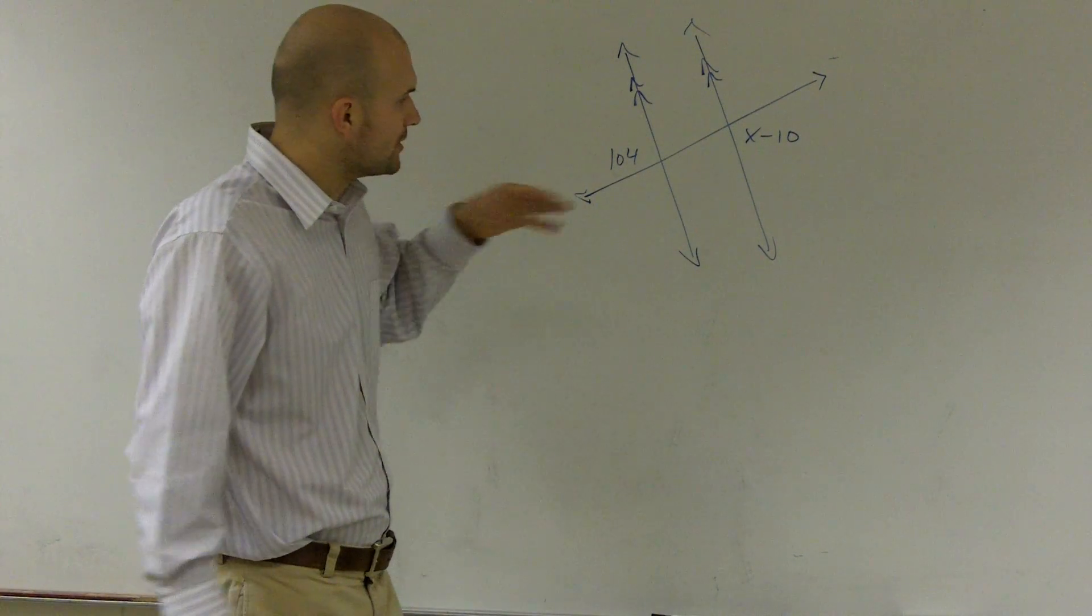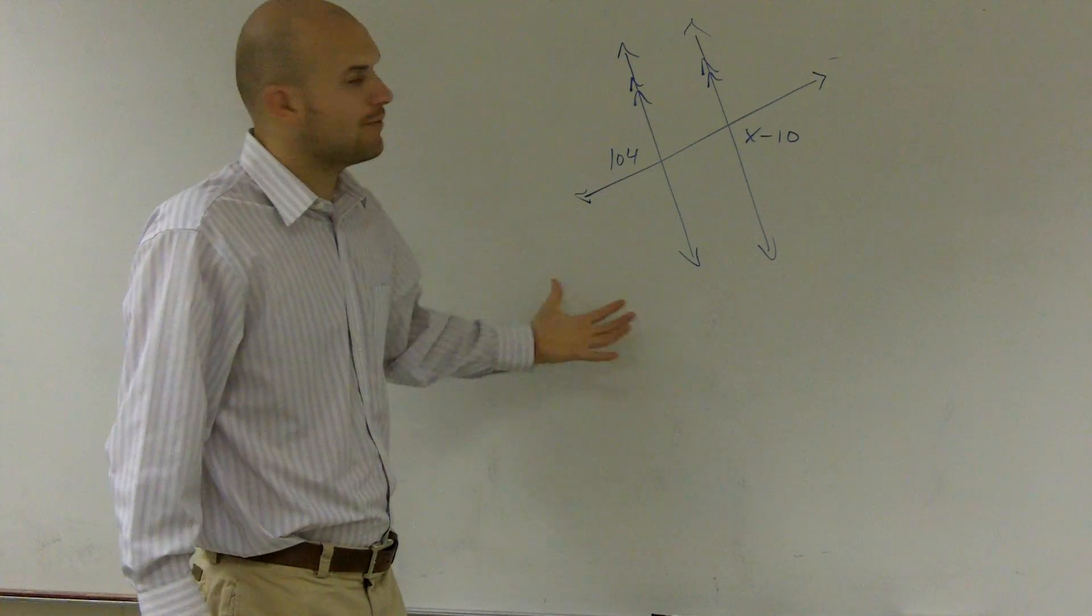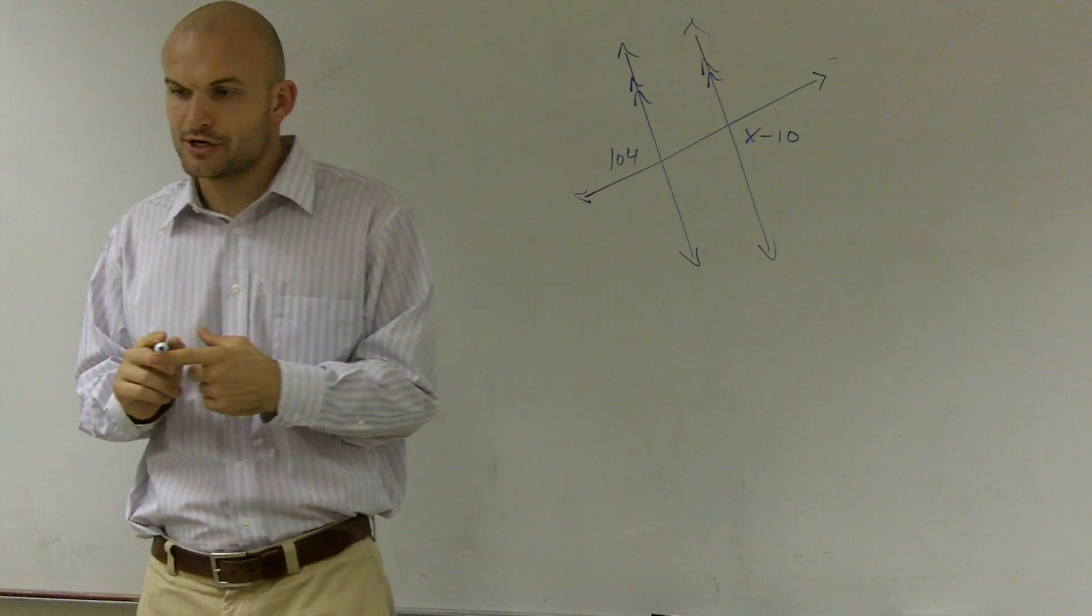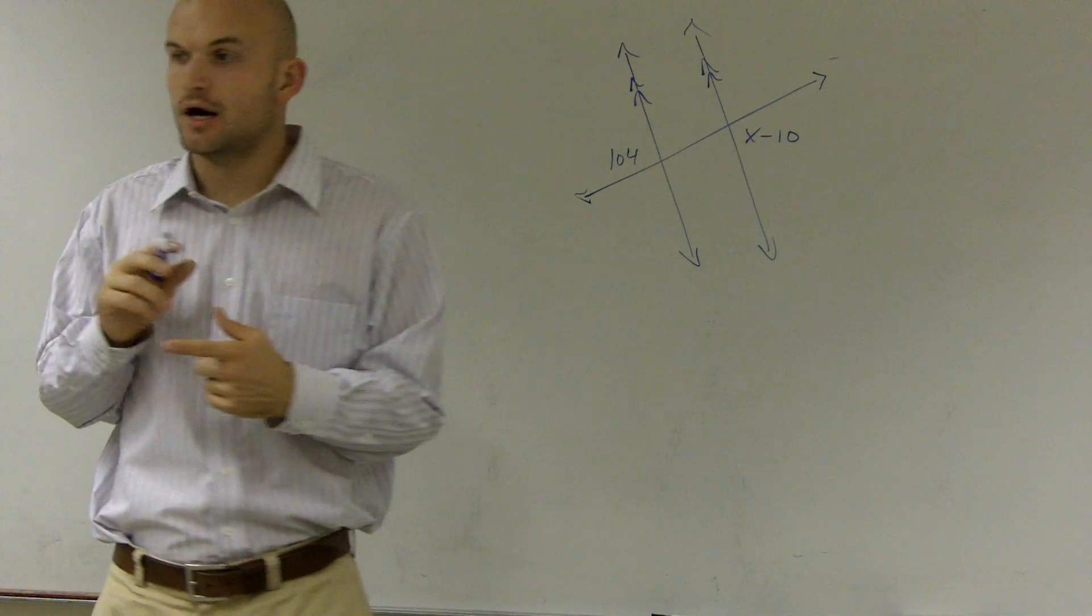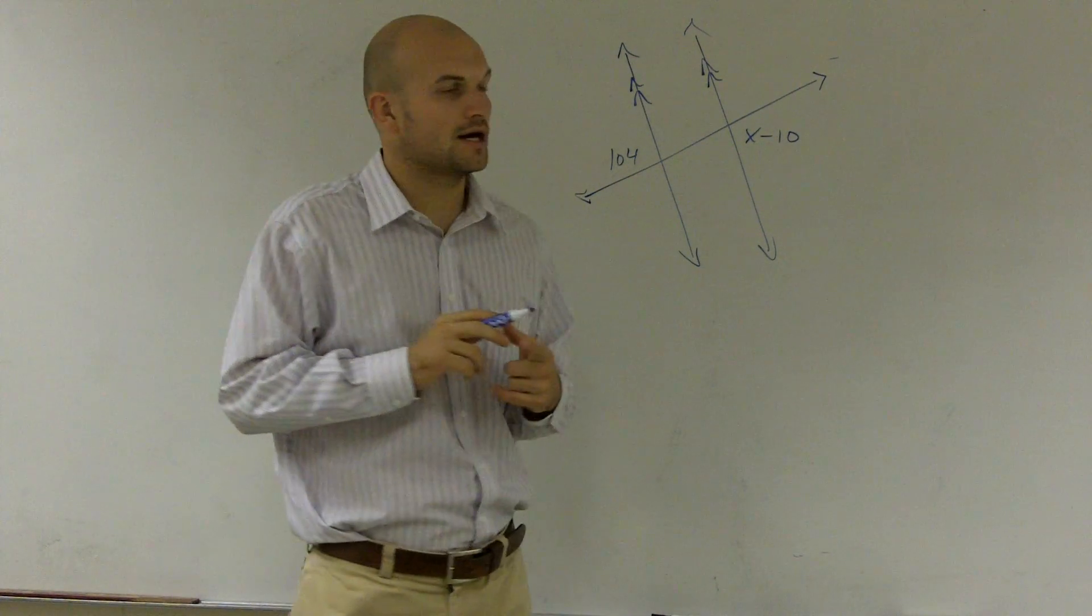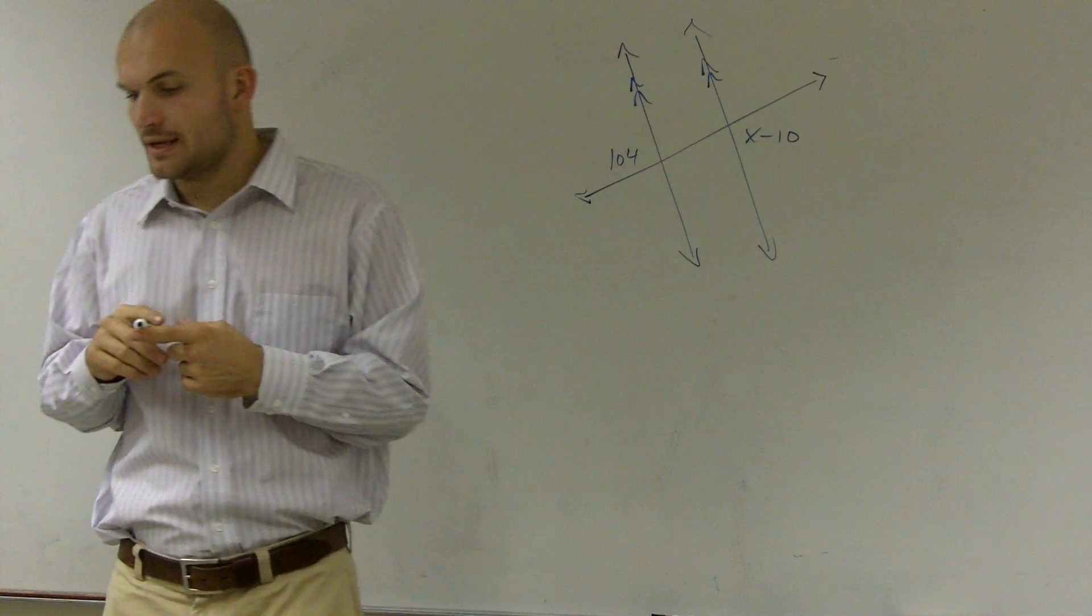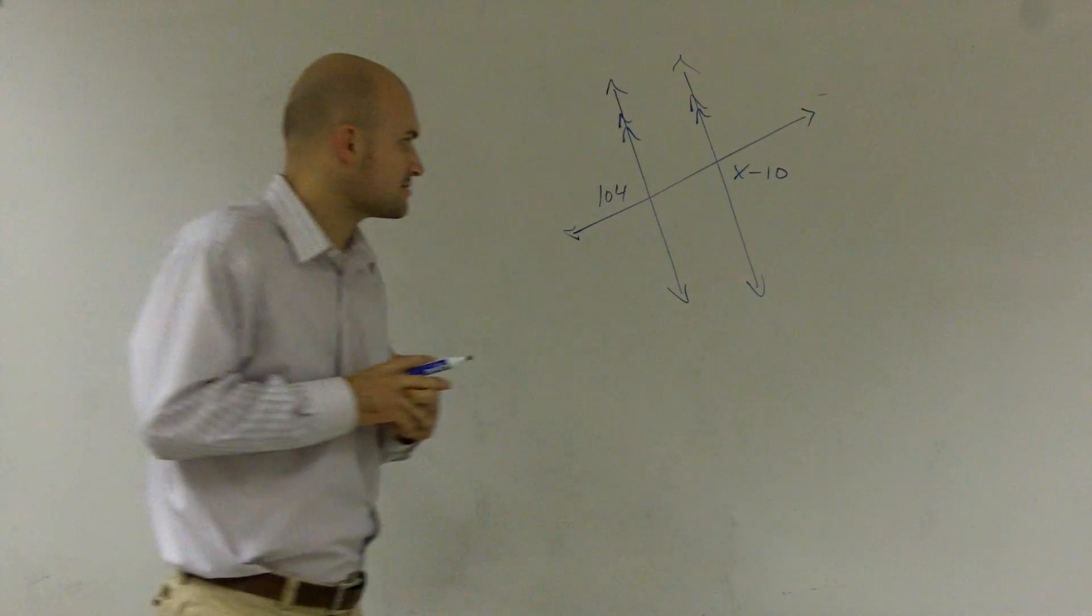And so what we're going to do is we're going to look at these two and say, well, what's so special, what's happening? Well, there's a couple things. We have same side interior add up to equal 180, alternate interior angles are equal to each other, alternate exterior angles are equal to each other, and corresponding angles are equal to each other.